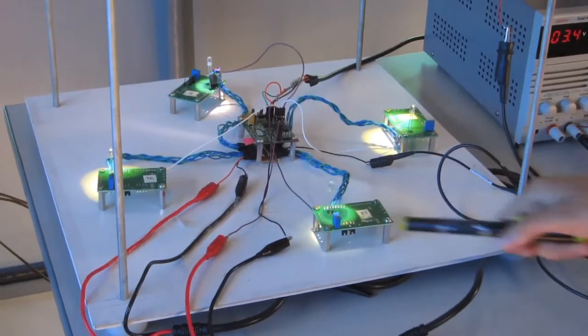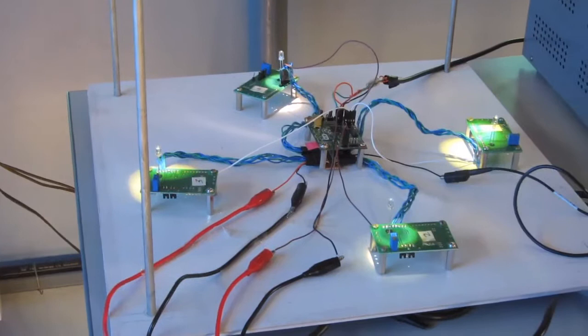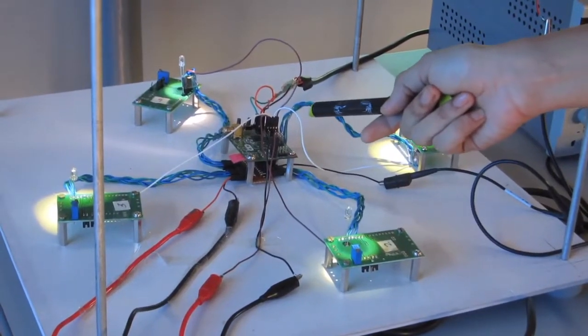At the receiver, we have photodiodes and some assisting circuitry that help in obtaining a demodulated output. This output is fed back to another microcontroller for further signal processing.